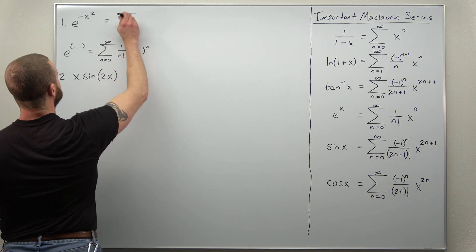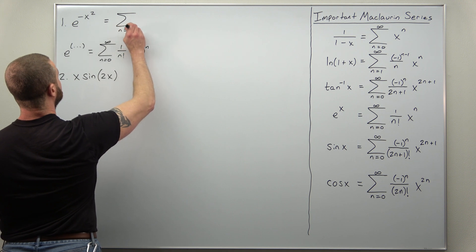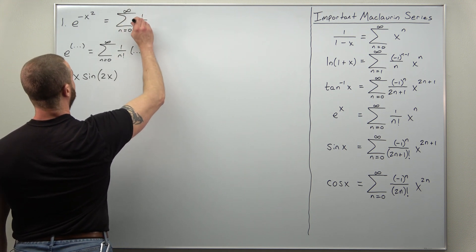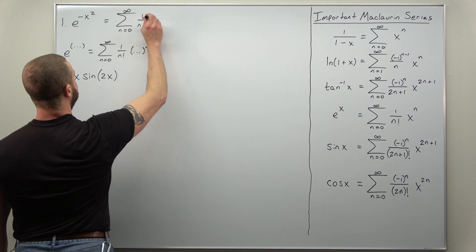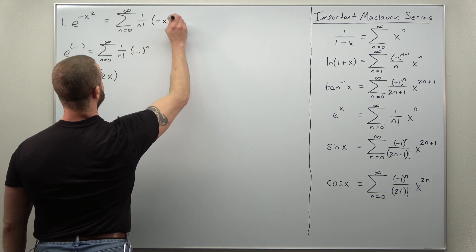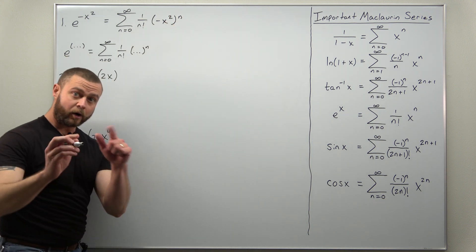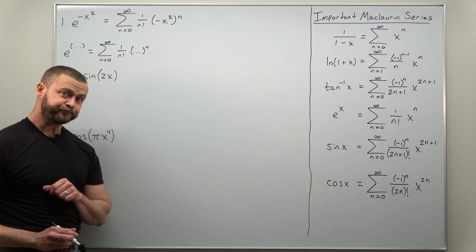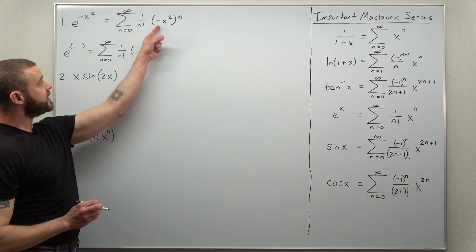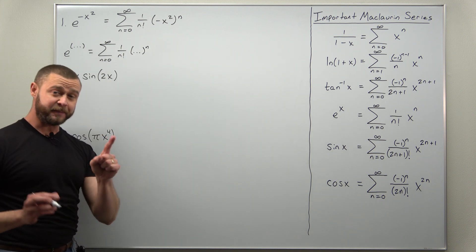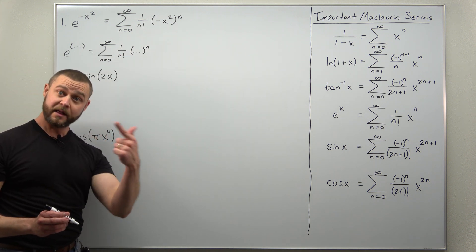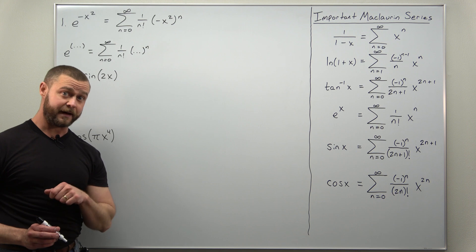So we'll get the sum from n equals zero to infinity of one over n factorial, but now negative x squared all to the nth power. We can simplify that by thinking of the inside as negative one times x squared and taking the nth power of each of them.